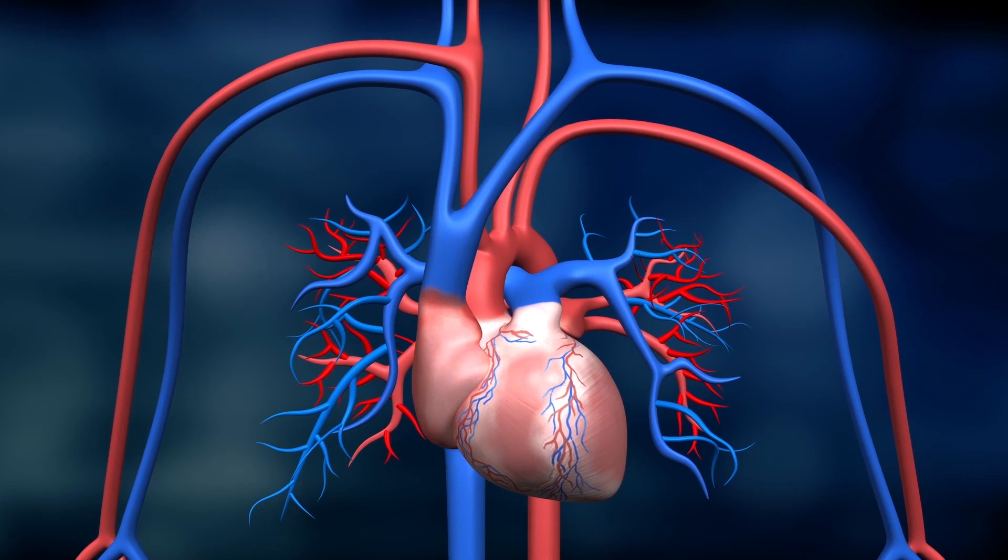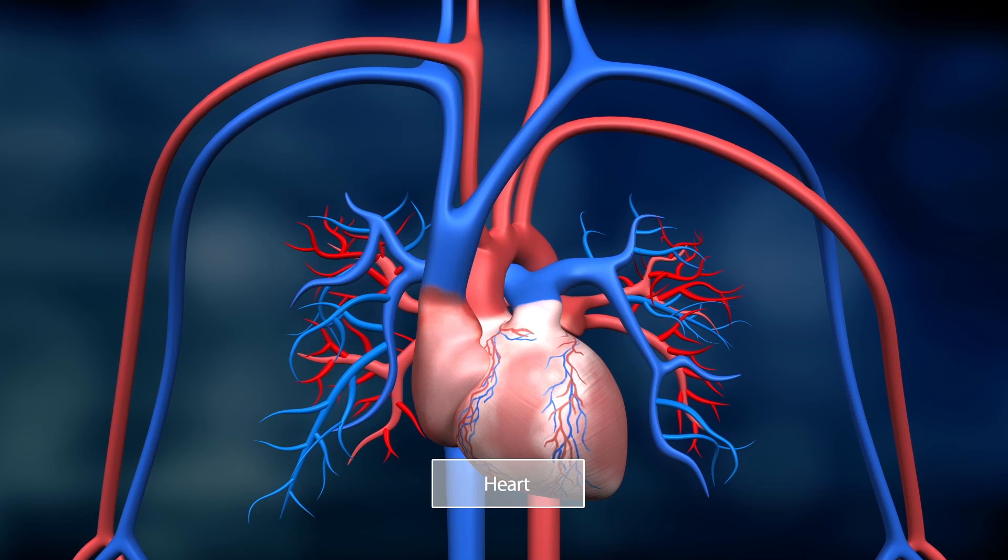Simultaneously, the heart pumps blood rich in carbon dioxide but poor in oxygen to the lungs through the pulmonary arteries.